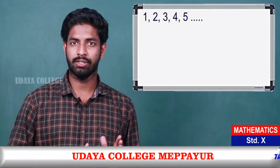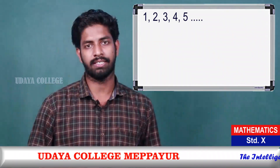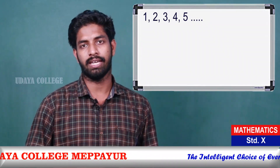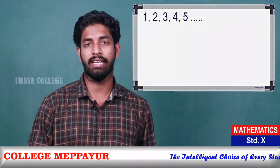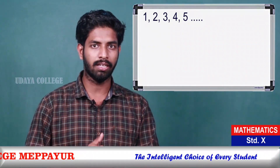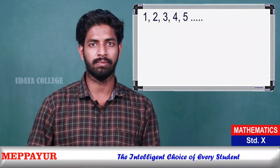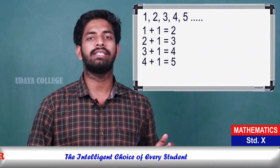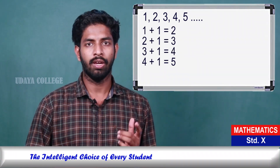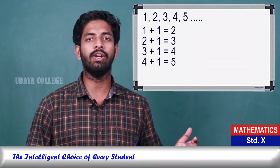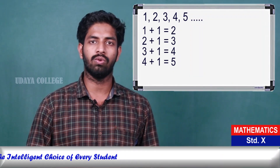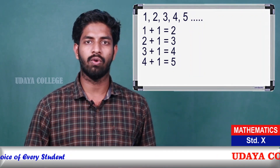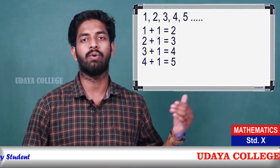One example of a pattern is the sequence: 1, 2, 3, 4, 5, and so on. Another is: 1, 2, 3, 4, 5.